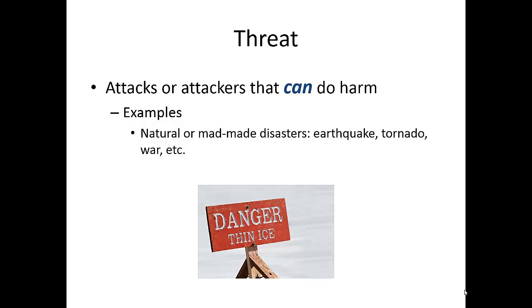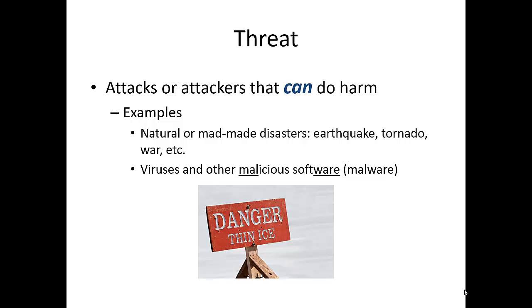Another type of threat is a man-made threat. For example, it could be a war. When a war occurs, information systems can be destroyed by physical means such as bombs. Another man-made threat is in the form of software. There are many software applications designed to harm an information system, such as viruses or trojans. We call these collectively malicious software, or in short, malware.